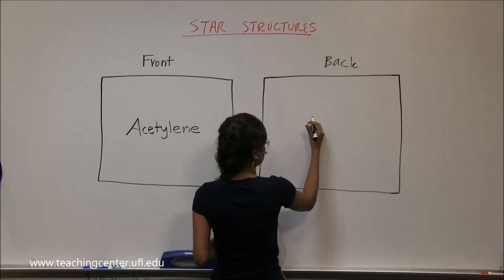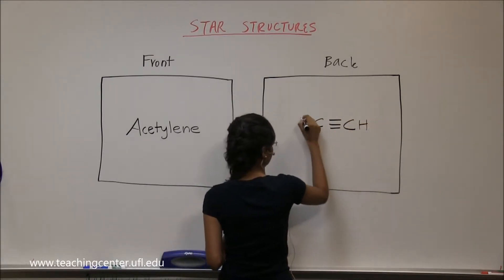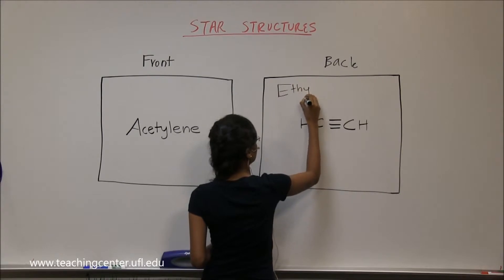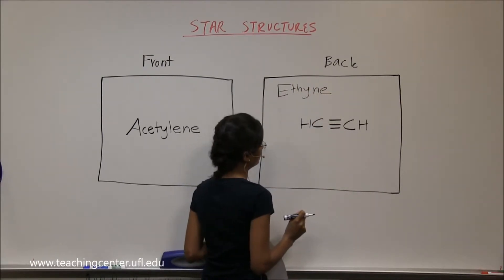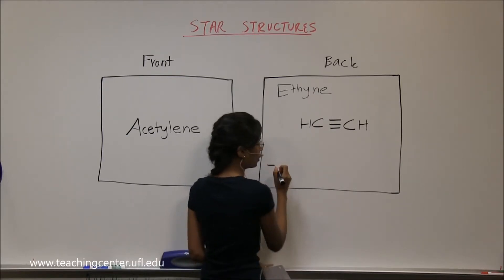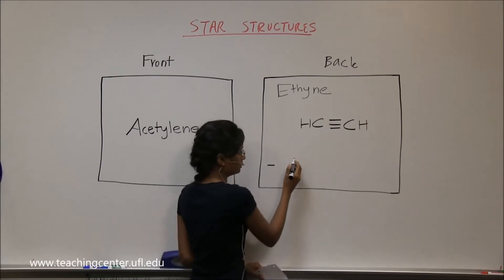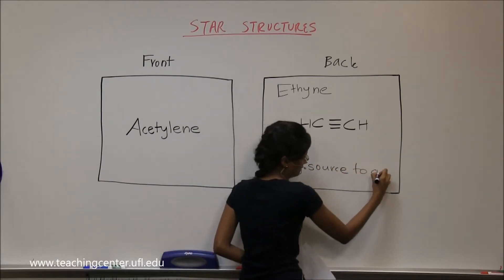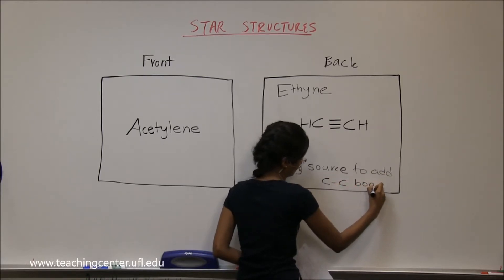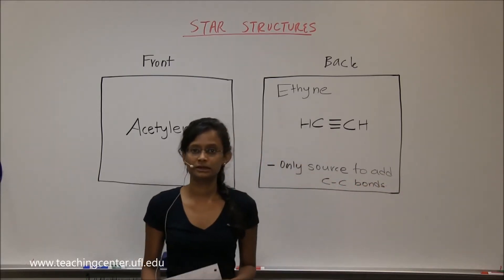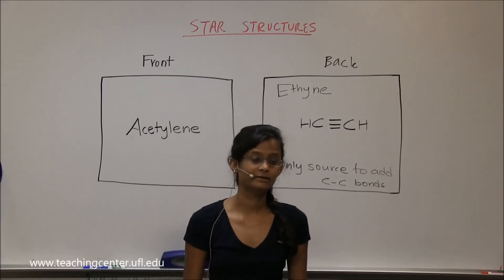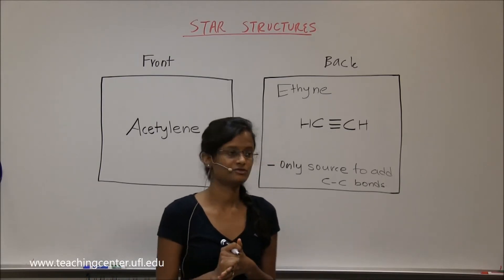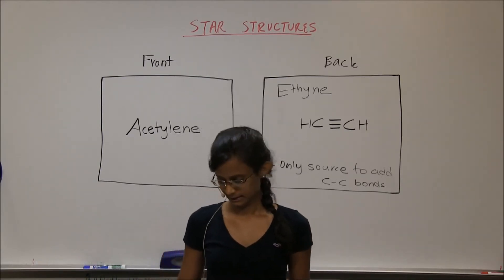So this is C triple bond C — that's what acetylene looks like. The IUPAC name is going to be ethyne. This will be your only source of the triple bond, and this will be helpful later in the semester after Chapter 7, where you're going to learn how you can use this molecule to increase the number of carbons. So this is just a future reference — and that's acetylene.